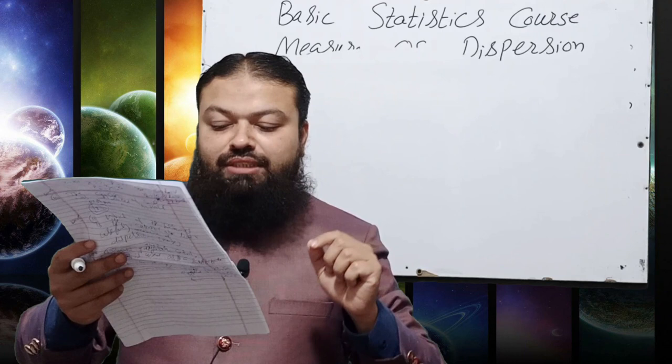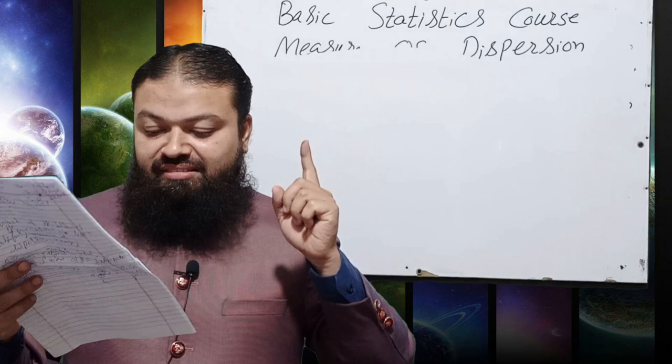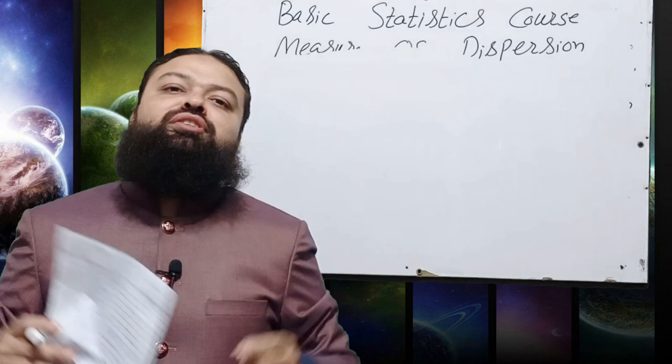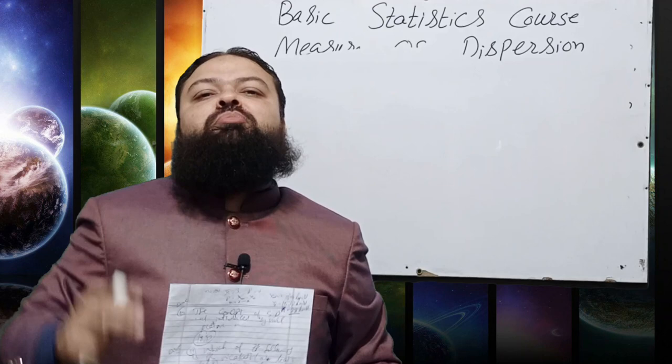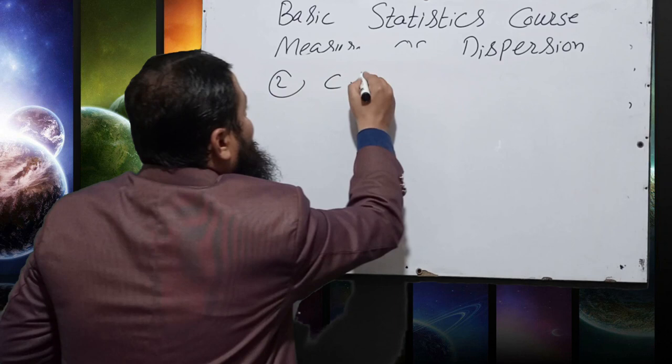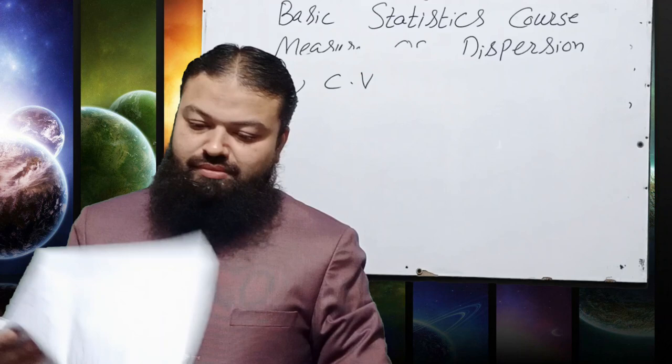Question number 2: If two independent series of observations are to be compared, which is the most suitable measure? Options: (a) standard deviation, (b) mean deviation, (c) range, (d) coefficient of variation. The coefficient of variation is a unit-less measure of dispersion, and when comparing two independent series, coefficient of variation is used.